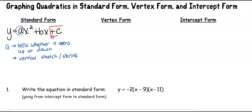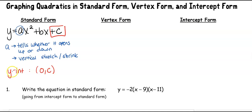What's unique about standard form is the C value — it tells you your y-intercept. Your y-intercept is going to be at (0, C), because the y-intercept has an x-value of 0. If you plug 0 in for x, those first two terms become 0, and you're just left with C.